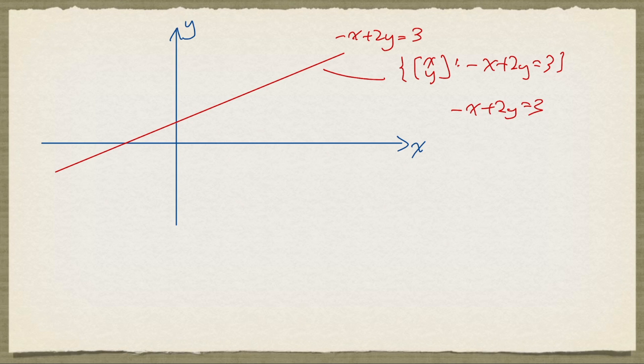So what we can do is we can rewrite this as x equal to 2y minus 3. And so if we set y equal to t, where t is any real number,